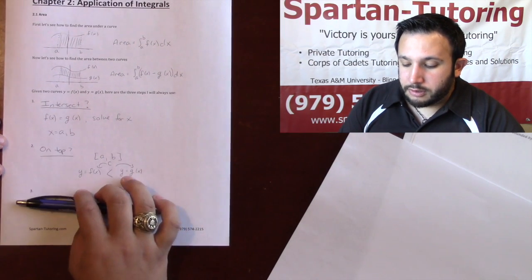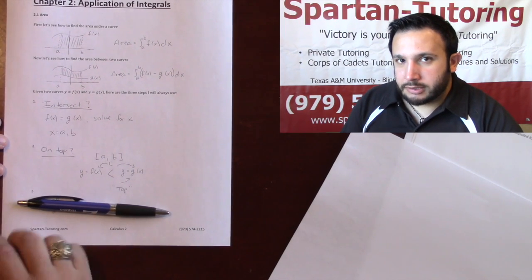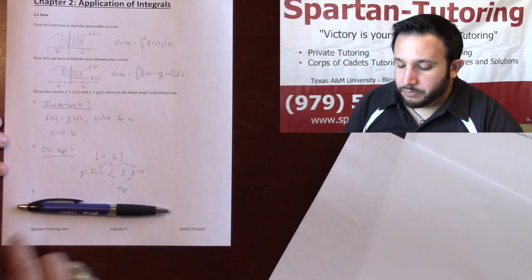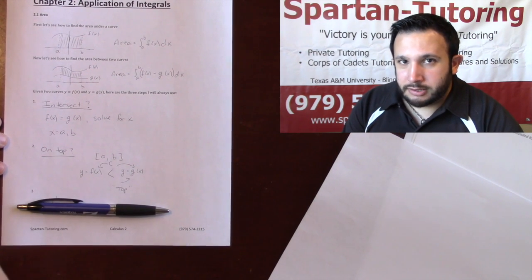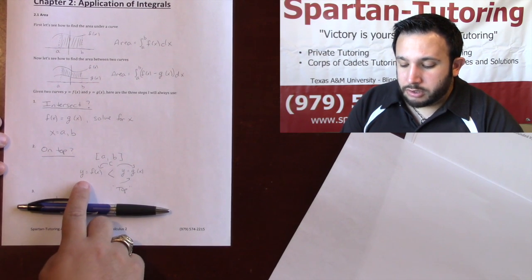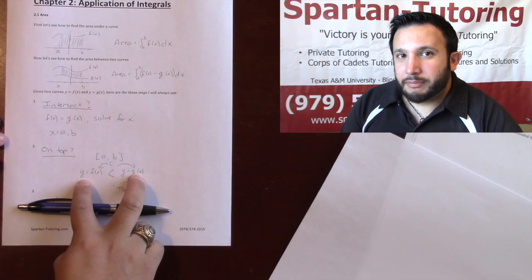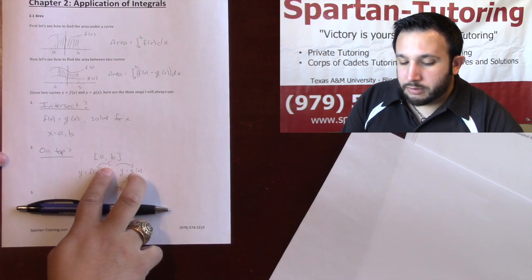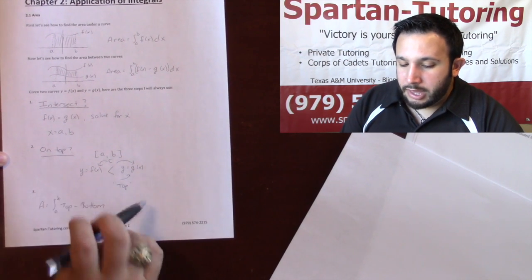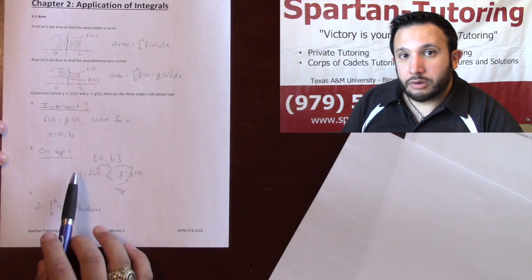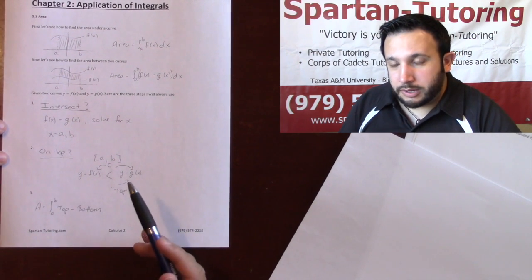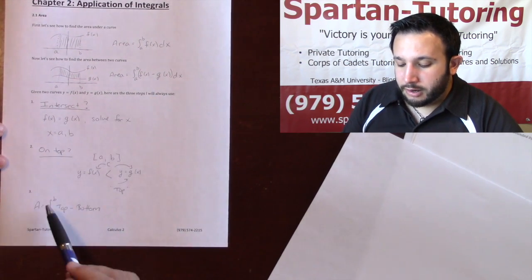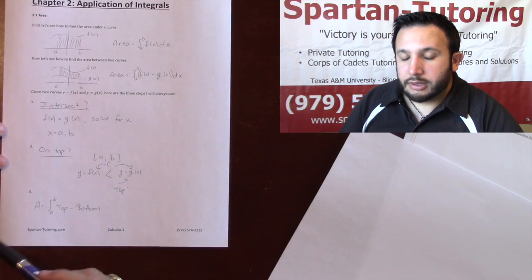The next thing you're going to do is figure out which function is on top. The x values you found are actually the limits of integration. You're going to take your interval a to b and do a comparison — compare y equals f(x) and g(x) by plugging in a random number in between a and b. I'll call it c. Plug it into both functions. Whichever function outputs the bigger number, that's your top. And then finally, area is the integral from a to b of top minus bottom.